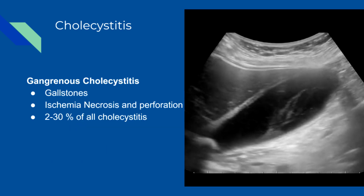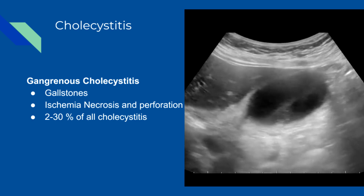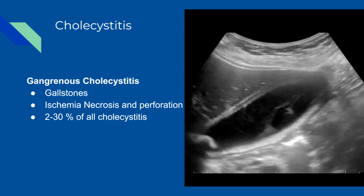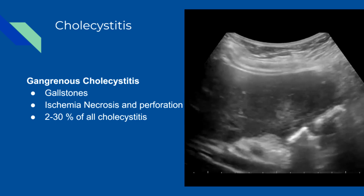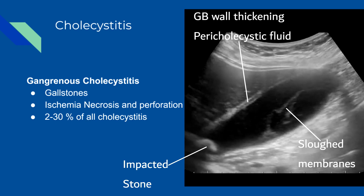Gangrenous cholecystitis is considered an evolution of cholecystitis, with an incidence ranging from 2% to 30% in all patients with acute cholecystitis. It features focal areas of necrosis, bulges of the gallbladder wall, sloughed membranes, and ulcerative craters. It can lead to gallbladder wall perforation, increasing morbidity and mortality due to peritonitis. This condition can often be indistinguishable from gallbladder empyema — a pus-filled inflamed gallbladder — or xanthogranulomatous cholecystitis from chronic inflammation.